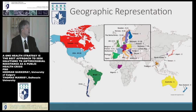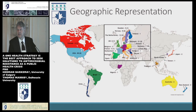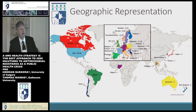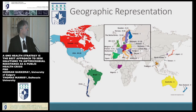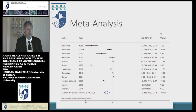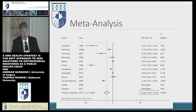The studies we included are shown here. I put this picture in because there are no studies from China or India that we could include — two of the major users of antibiotics in the world, and two countries where animals and humans live very closely together. So if there is transmission of resistant bacteria, those are the two countries where it will easily occur and, because of global travel, come to us. This is an example of one of the funnel plots from the animal side: 22% less antimicrobial resistance occurs if you pool all the studies and restrict the use of antibiotics in animals.